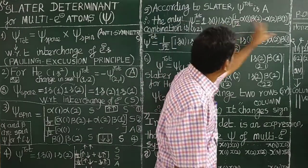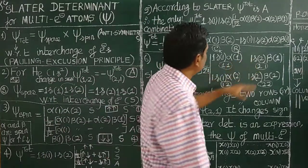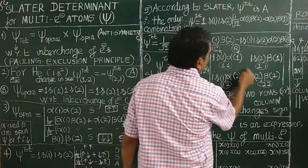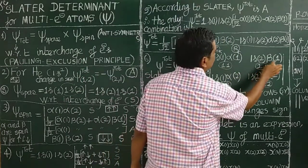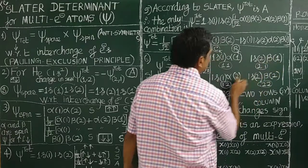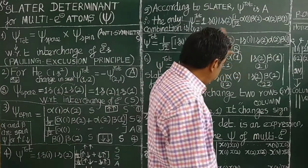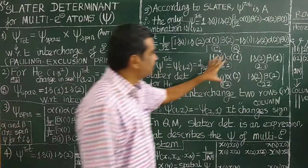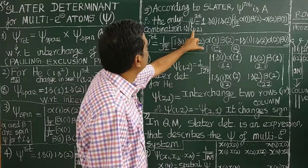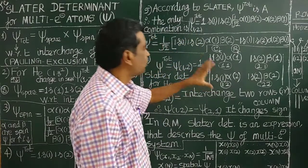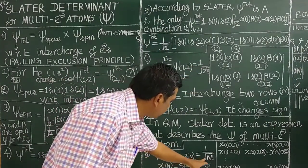On multiplying, you will get the wave function equation, which can be represented in determinant form. For two electrons, the normalization factor is 1/√(2!) = 1/√2. For n electrons, the factor is 1/√(n!). For a 3-electron system, it is 1/√(3!). Verticals in the determinant are called columns; horizontals are called rows.